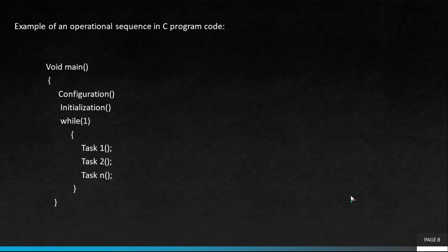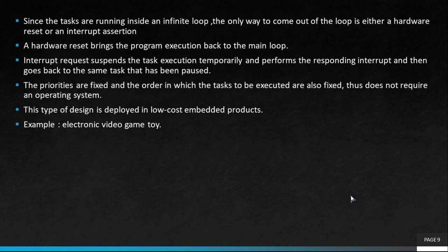Since the tasks are running inside an infinite loop, the only way to exit the loop is either by a hardware reset or an interrupt assertion. A hardware reset brings program execution back to the main loop. In the case of an interrupt request, it temporarily suspends task execution, handles the interrupt response, and then returns to the same task that was paused.